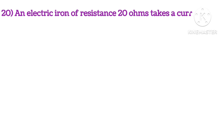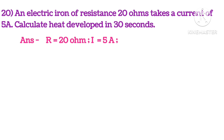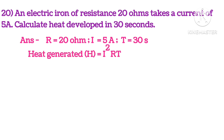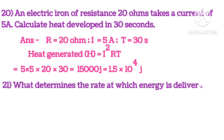An electric iron of resistance 20 ohms takes a current of 5 ampere. Calculate the heat developed in 30 seconds. Resistance = 20 ohms, current = 5 ampere, time = 30 seconds. Using H = I²Rt and putting in the values, we get H = 1.5 × 10⁴ joules.